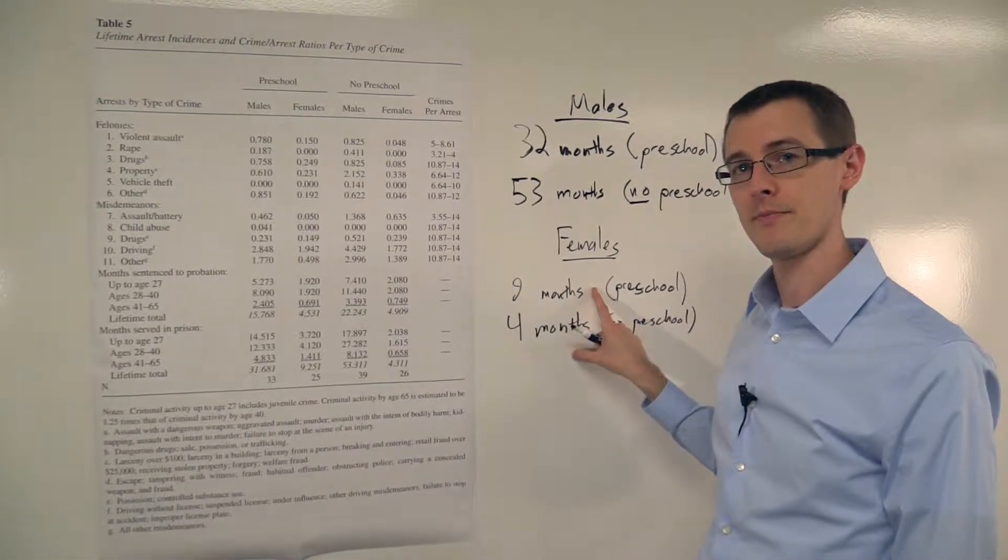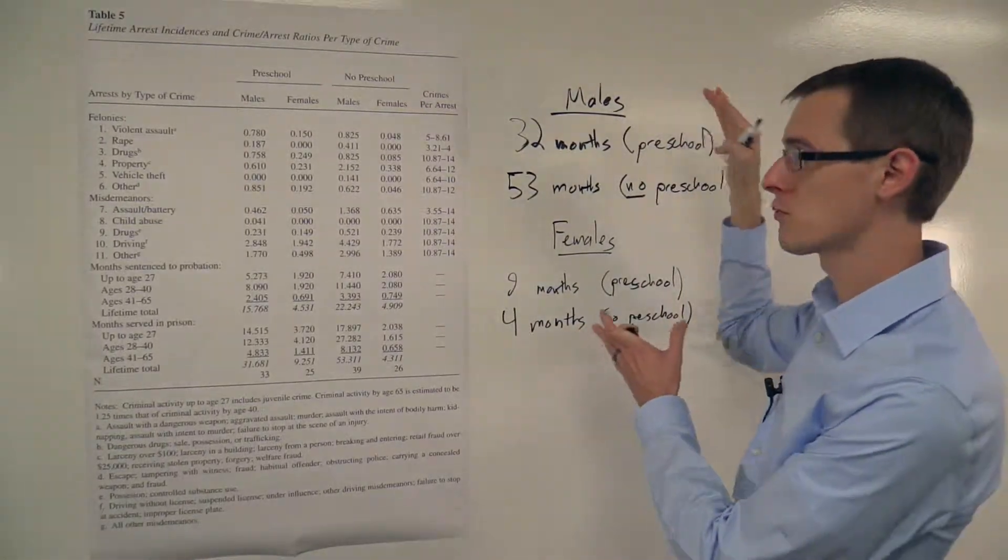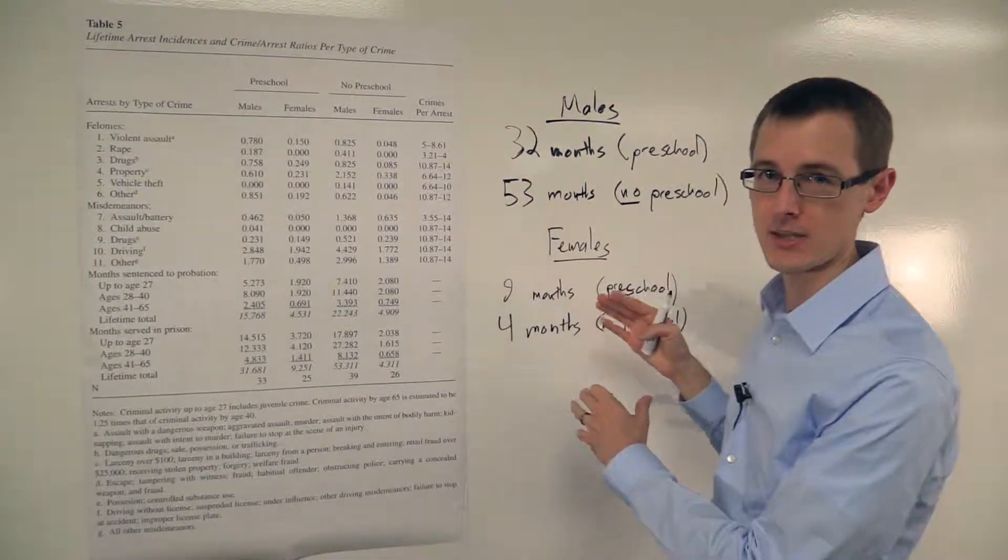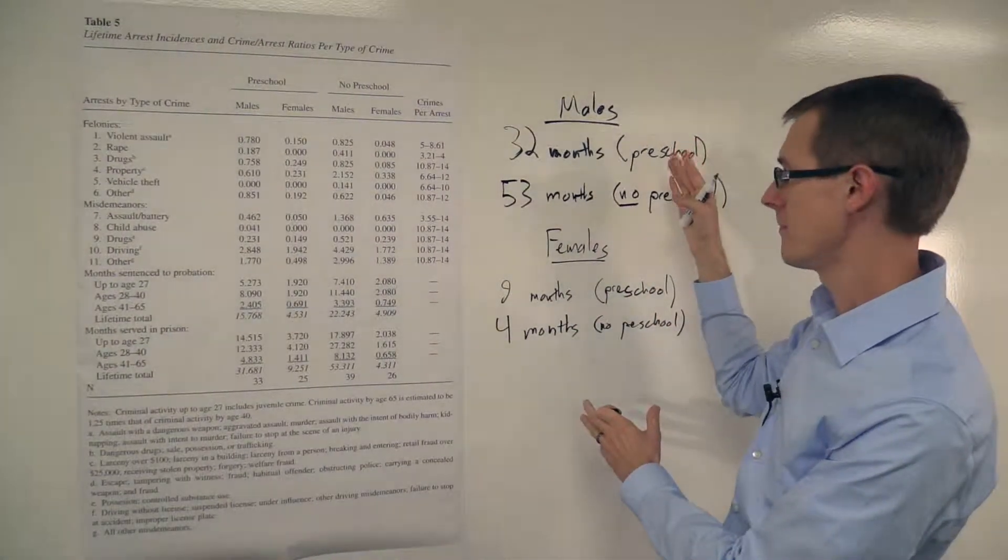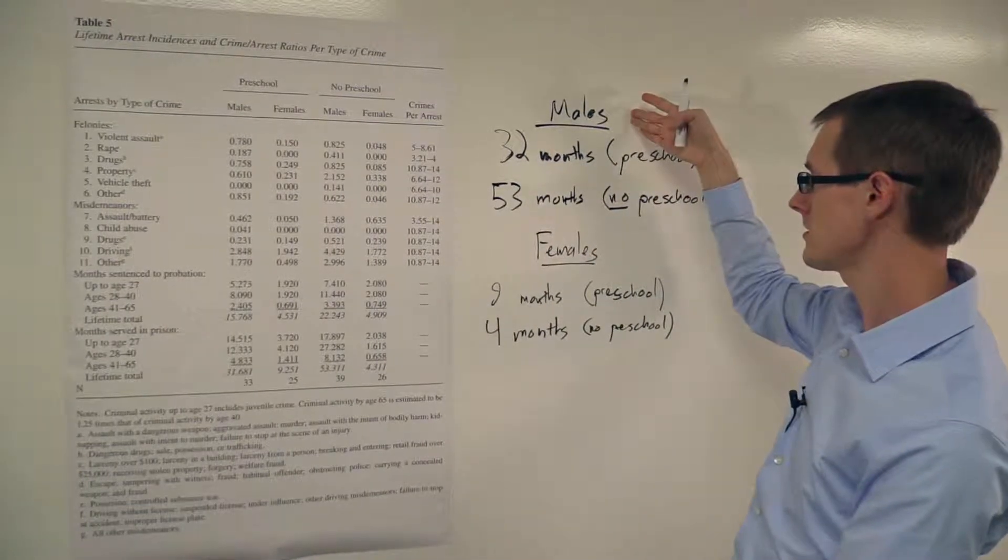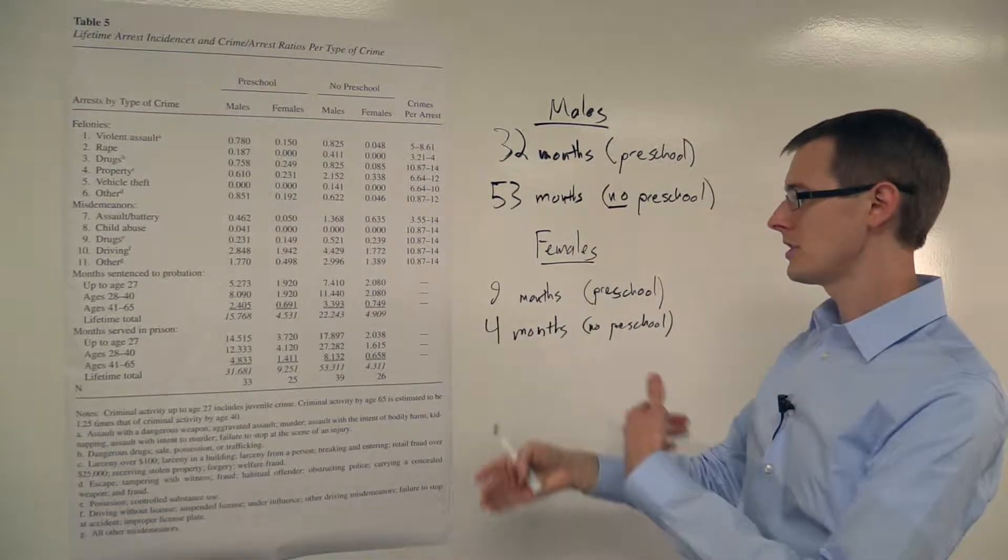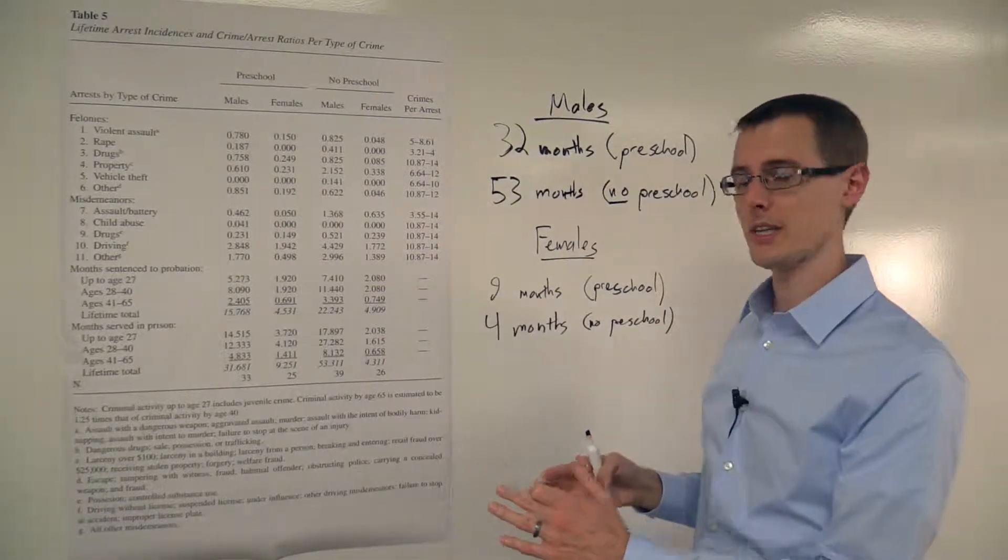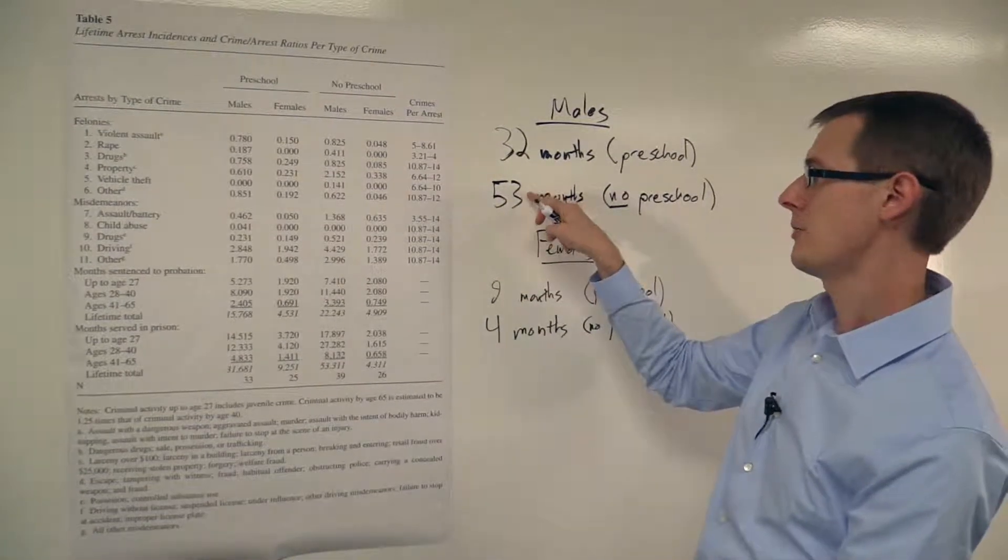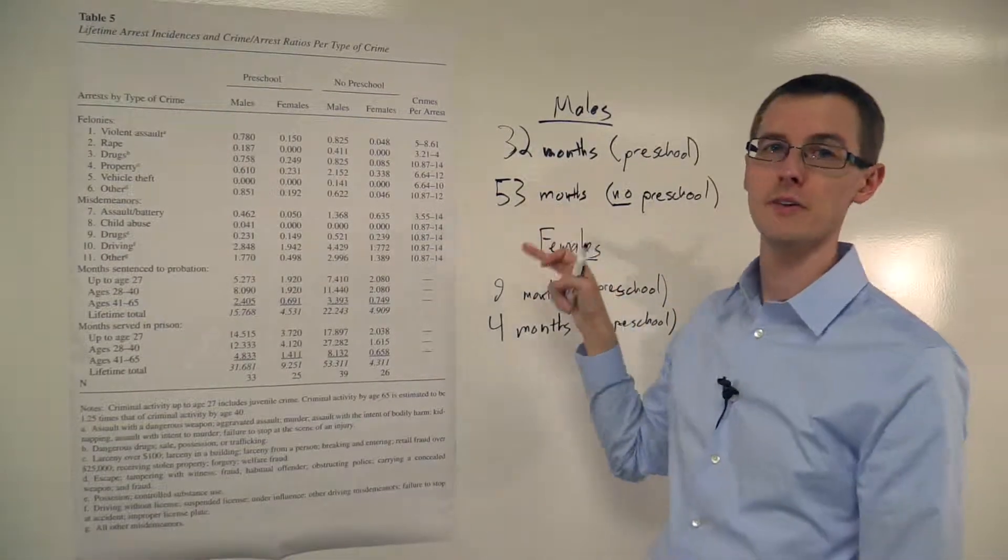So this might not actually be a true treatment effect for that reason, and we'll get to that later on. But this seems to be just looking at the raw data and not worrying about statistical inference and hypothesis tests and all that stuff. This is what we see. It suggests that there is a large treatment effect for males, and for females, it goes in the opposite direction, if anything, if there is anything there. But this is a pretty small difference, relatively, four to nine, compared to this difference, 32 to 53.